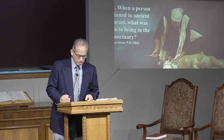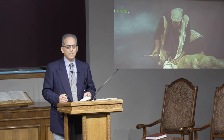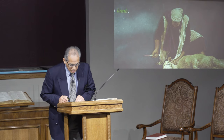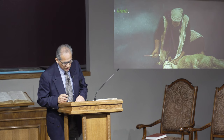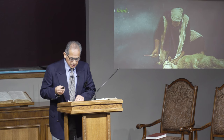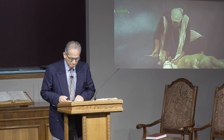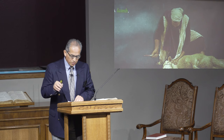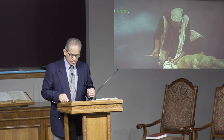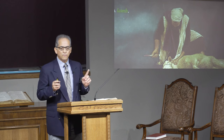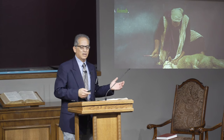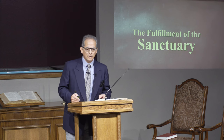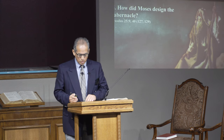Number four: when a person sinned in ancient Israel, what were they to bring to the sanctuary according to Leviticus 5:6? They were to bring a lamb. The sanctuary is the place where forgiveness of sins was obtained. The sinner confessed their sin over the lamb, then the lamb was slain at the altar of burnt offerings, and the priest took the blood of the lamb and sprinkled it before the veil by the altar of incense — symbolically transferring the sin from the sinner to the lamb to the sanctuary.